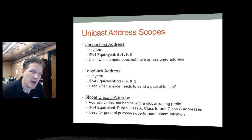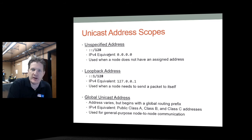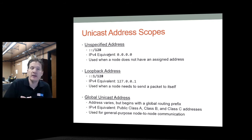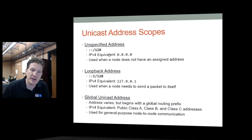Let's talk about the first major scope type — the unicast address scope. First, there's a special address called the unspecified address, written as '::' on a /128 — this is all zeros compressed, used when a node does not have an assigned address. The IPv4 equivalent was 0.0.0.0. You also have the loopback address, which is '::1' — all zeros compressed with a one at the end. The IPv4 equivalent was 127.0.0.1, known as localhost. Once you learn to ping with IPv6, you can ping that loopback address and test TCP/IP functionality on your local machine.